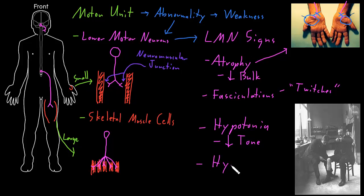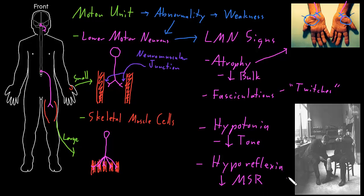Another lower motor neuron sign is called hyporeflexia, which refers to decreased muscle stretch reflexes. This is a reflex that happens if you rapidly stretch a skeletal muscle — like if you hit the tendon of the muscle with a little rubber hammer, as this doctor is doing to this patient. I'll do a separate video on muscle stretch reflexes to discuss why reflexes decrease with problems of the lower motor neurons, because that one we understand pretty well.